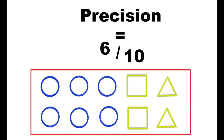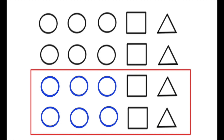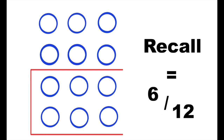But for recall, what we're looking for is the number of relevant instances that were chosen — so that's six circles — out of the total available instances, which would be the total number of circles. So there were 12 total circles but only six were actually chosen. That means we have a recall of six out of 12.